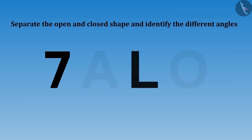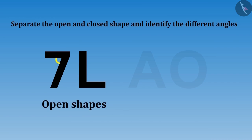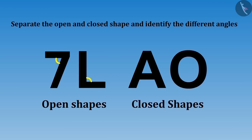Here number 7 and the letter L are open shapes. They have one angle in them. A and O are closed figures. But alphabet A has several angles in it.